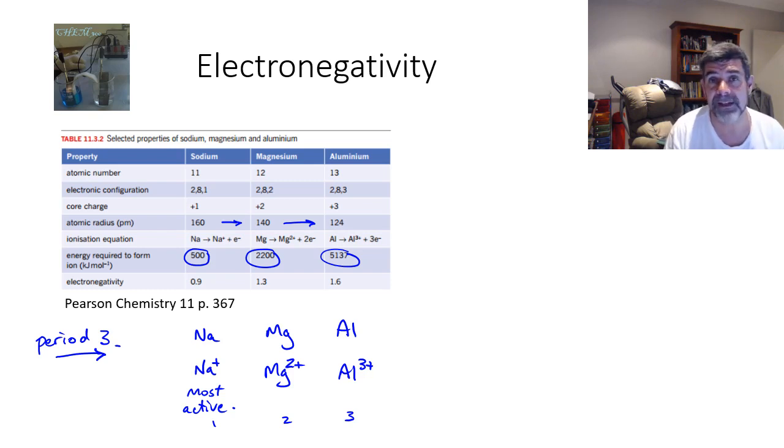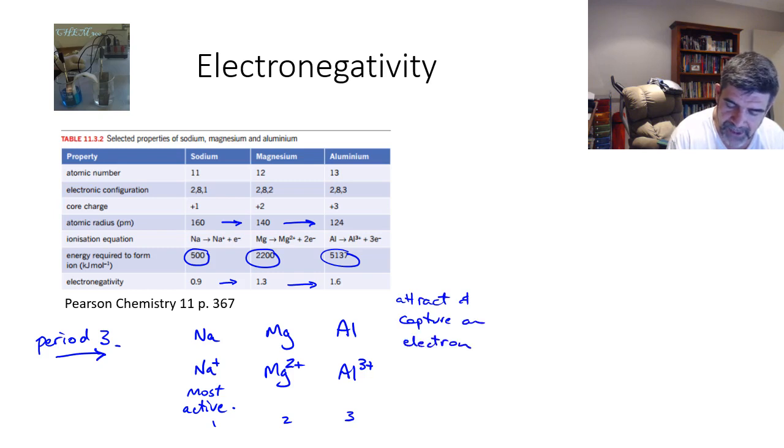The other trend which we haven't looked at in separate videos, but we can quickly look at now, is electronegativity, which increases as we go across the period. Electronegativity is the ability of the atom to attract and capture an electron. Think about electronegativity as the ability to take an electron and become negatively charged.